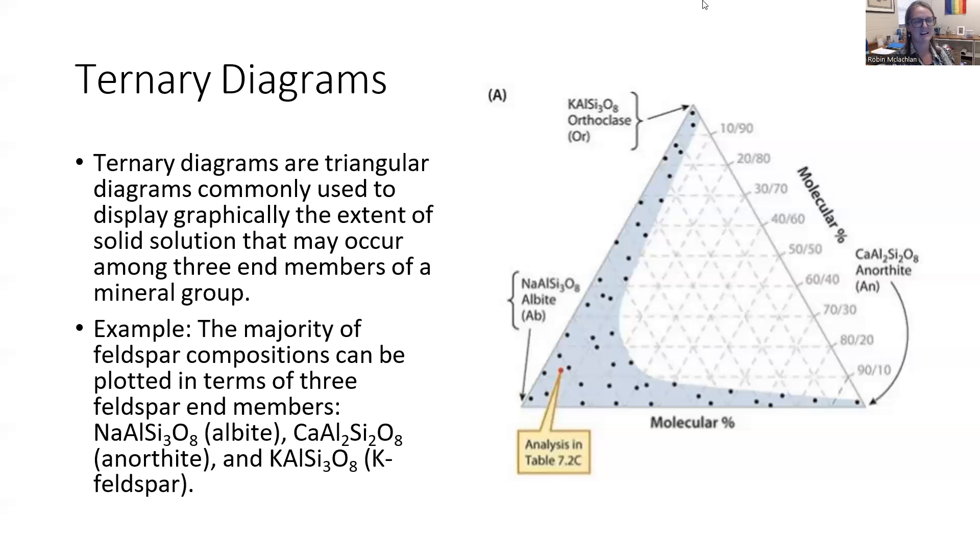Now, notice that this diagram is showing you that ternary space, everything that's in this 3D space. But only the black dots and the blue is showing you what's actually possible, what actually happens naturally on Earth. So it's super common for albite to be shared a little bit with orthoclase, for albite to be shared a little bit with anorthite.